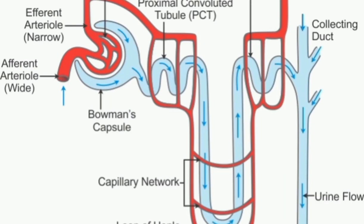The filtrate formed in the Malpighian body will be collected into the renal tubule, which is divided into three parts. The first highly coiled portion is called the proximal convoluted tubule, which enters into the loop of Henle, and which continues as the distal convoluted tubule. The descending limb of the loop of Henle is connected with the proximal convoluted tubule, passing filtrate to the descending limb which is connected to the distal convoluted tubule via the ascending limb. This distal convoluted tubule opens into a collecting tube, which forms pyramids and calyces that open into the pelvis. The pelvis leads into the ureter.